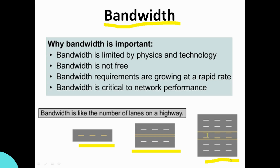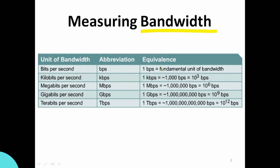This single lane has unlimited signals — the bandwidth is the same. Comparatively, looking at the first and second diagram, the third diagram is the same. Bandwidth is the same across these diagrams.